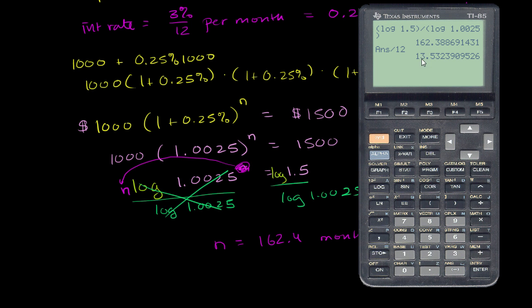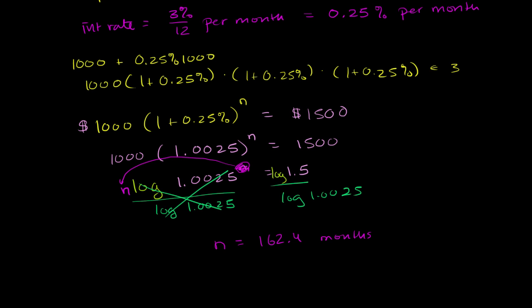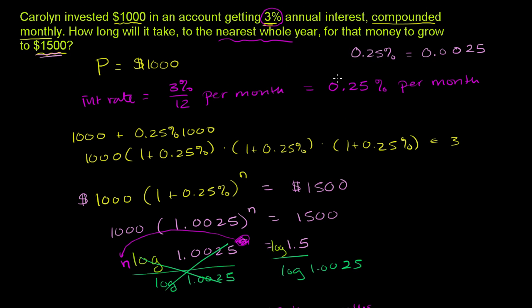It'll take 13 and a half years. If we round it to the nearest year, which they're asking us to do, if we go to the tenths place, we have a 5. That's obviously greater than or equal to 5, so we round up. We'll round this up to 14 years. This will take approximately 14 years at that interest rate to grow to $1,500.